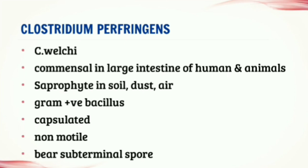The spores are subterminal and are rarely seen in culture media or material from pathogenic lesions — it doesn't produce spores in tissues or in culture media, especially the gas gangrene strains. Those species usually won't produce any spores in tissues or culture media. It can be identified by a Nagler reaction, which we will discuss later in the biochemical identification part. The spores are wider than the bacillary body, giving the bacillus a swollen appearance resembling a spindle, and because of this spindle-like appearance, the name is derived from the word kolster, meaning spindle.